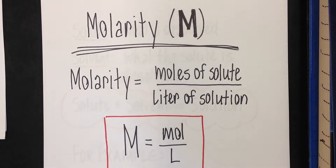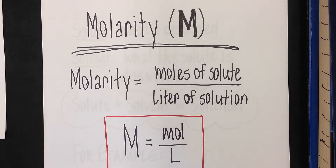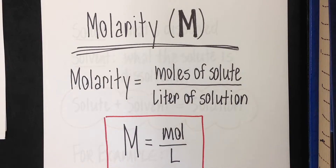Let's talk about molarity. Molarity is a way to express a concentration. There are lots of ways to express how concentrated a solution is — you could use percentages, parts per million, parts per billion, parts per hundred. Those are all ways you may have heard before when someone is trying to express a concentration. By concentration, we're just looking at how much solute is dissolved in a certain amount of solution, or how much stuff you're dissolving per a certain amount of solvent.